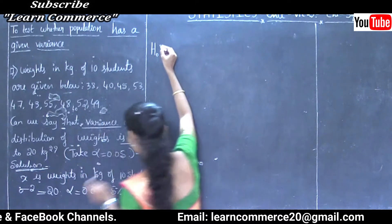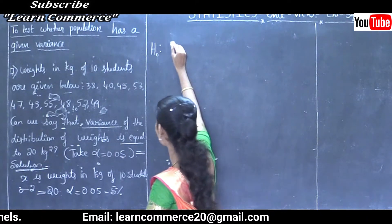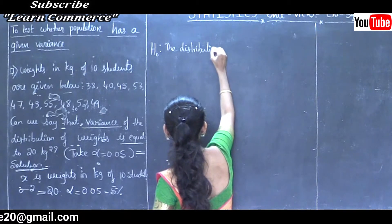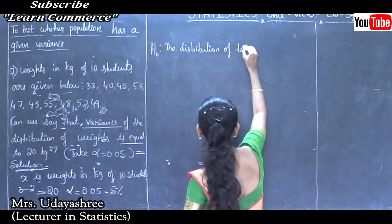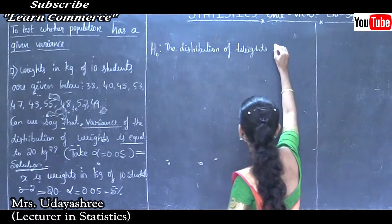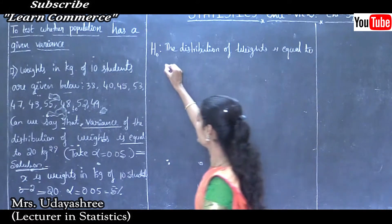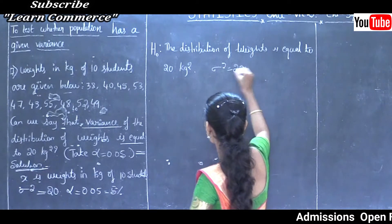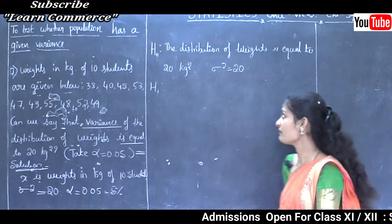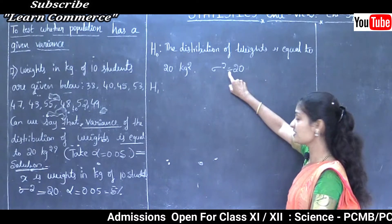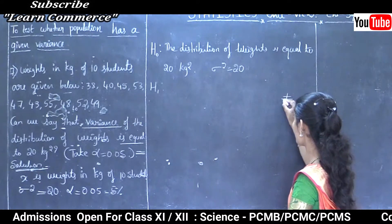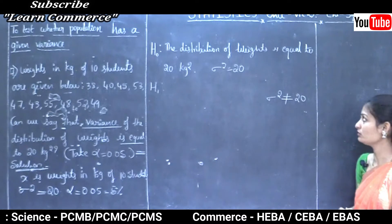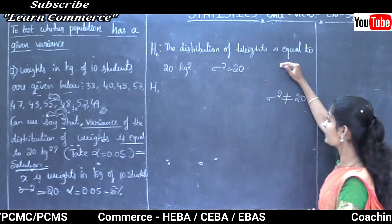Step 1: H0 is the distribution of weights is equal to 20 kg square, i.e., sigma square = 20. Step 2: H1 is the alternative hypothesis — possible rejection of H0. Since H0 is equal-to type, H1 is not-equal-to type: sigma square is not equal to 20.